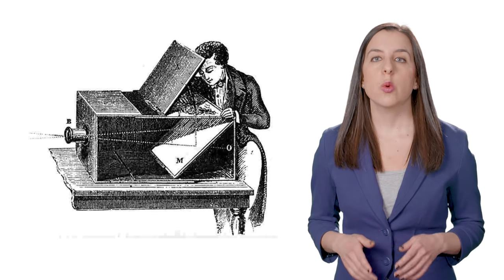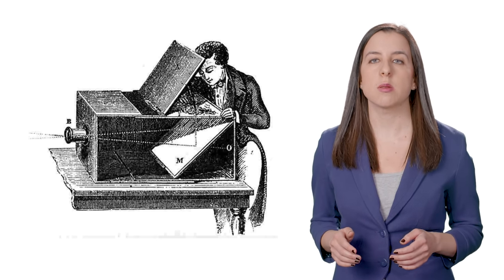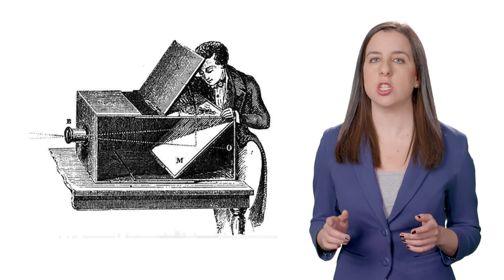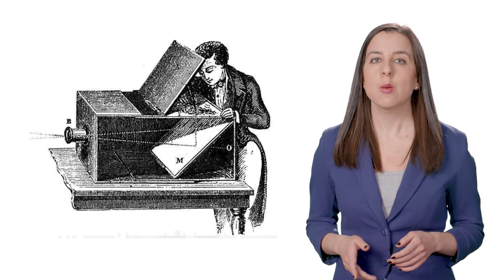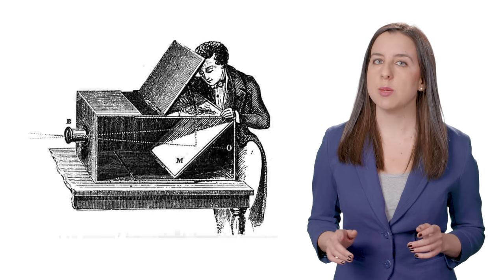Now, 200 years later, we have much more advanced versions of the system that can capture photos right into digital form, so we've been able to closely mimic how the human eye can capture light and color. But it's turning out that that was the easy part.